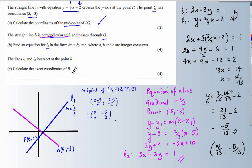Key points: we have a midpoint — an average — the equation of a line using a gradient and a point, not forgetting that a perpendicular gradient can be found using the reciprocal and negative, and then a point of intersection which is a simultaneous equation to finish off.